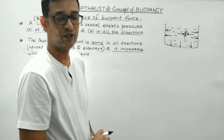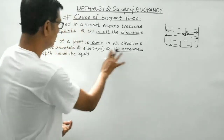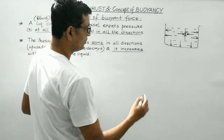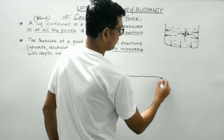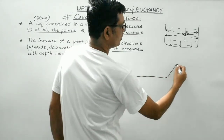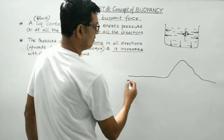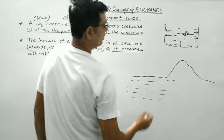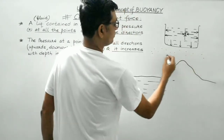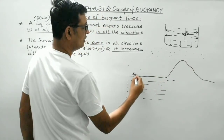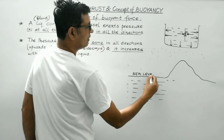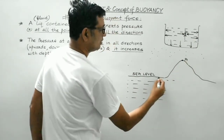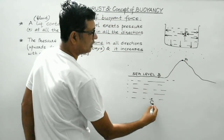Pressure increases with depth inside the liquid. Consider the water surface, a mountain, and a sea or river. This is Earth's atmosphere. Suppose this is sea level. One point is at some height above sea level and another point is at some depth below sea level. Let us call them point A, point B, and point C.